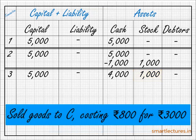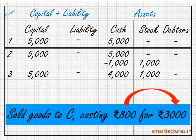Sold goods to C, costing Rs. 800, for Rs. 3000. The goods have been sold on credit basis to C, because they have not mentioned whether the sales were cash or credit, but they have mentioned the name of the customer, C. So it will be assumed that these were credit sales — goods were sold to the customer but money was not received at the time of transaction; it will be received in future. The cost of the goods was 800 and it has been sold for Rs. 3000, so there is a profit of Rs. 2200. If the goods are sold on credit basis at profit, it doesn't mean we have not earned the profit. The profit has been earned, but the money has not yet been received.